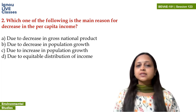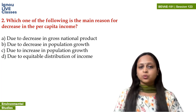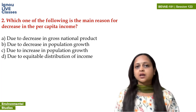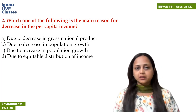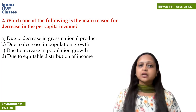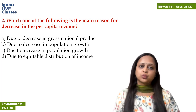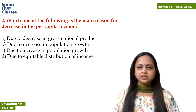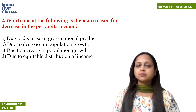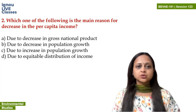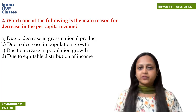That is gross national product. Due to decrease in population growth — is population growth the reason for per capita income? Another option is due to equitable distribution of income.